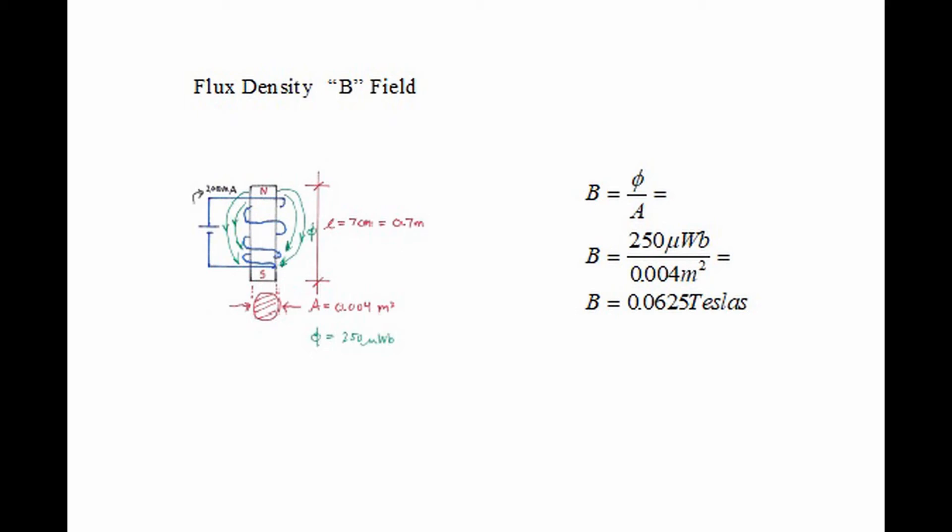What we learn from this example is that the skinnier the bar magnet, the tighter will be the lines of force and therefore the flux density will be higher.